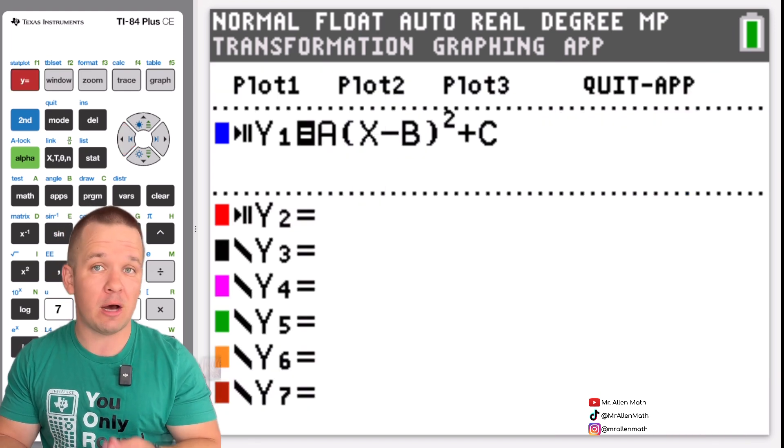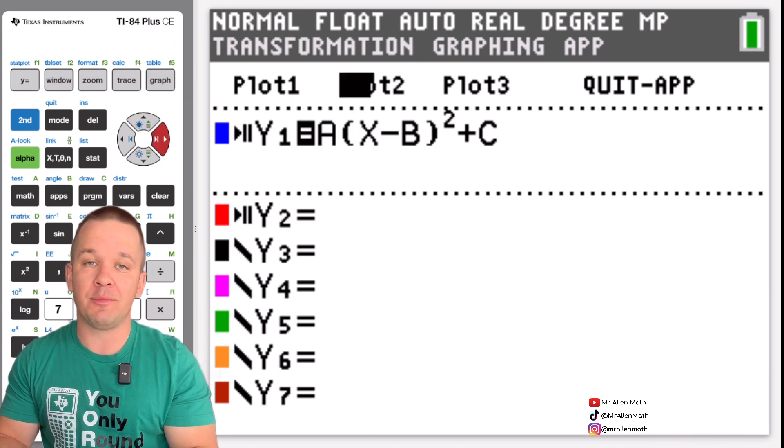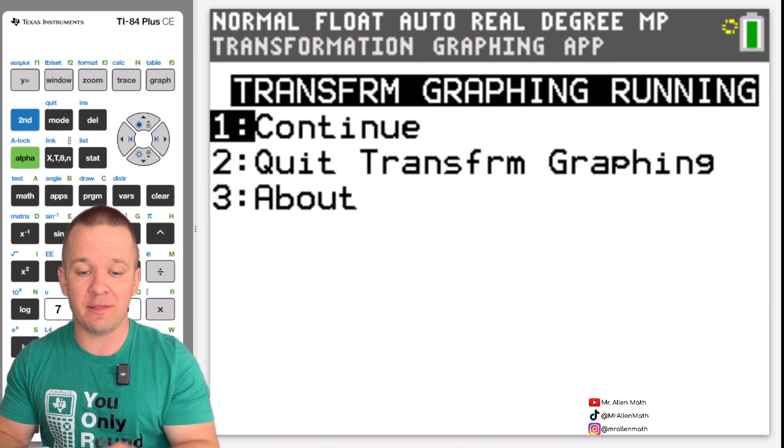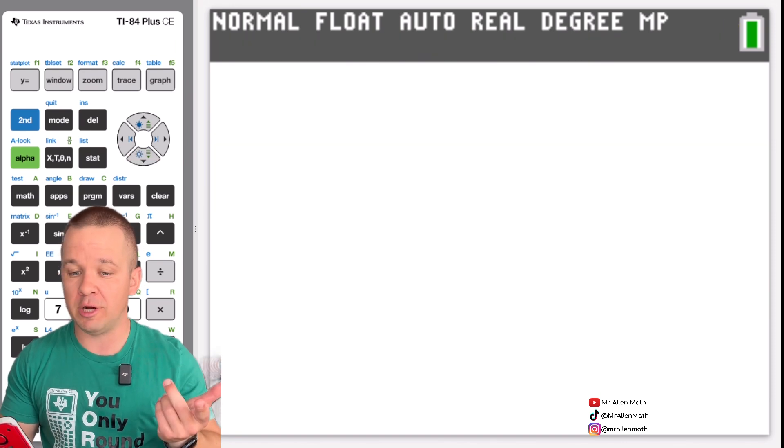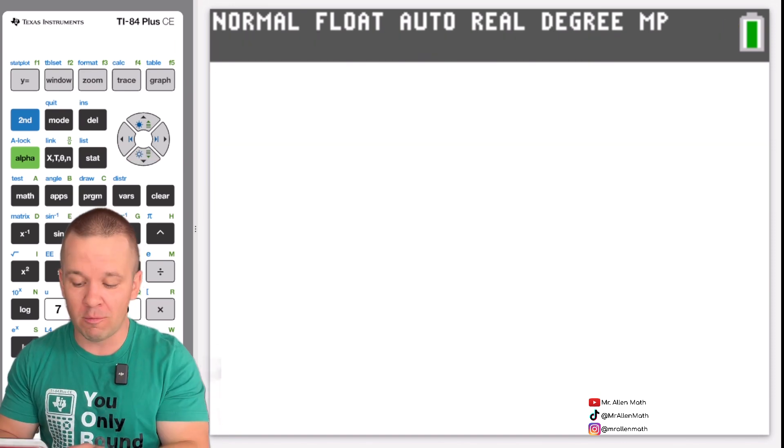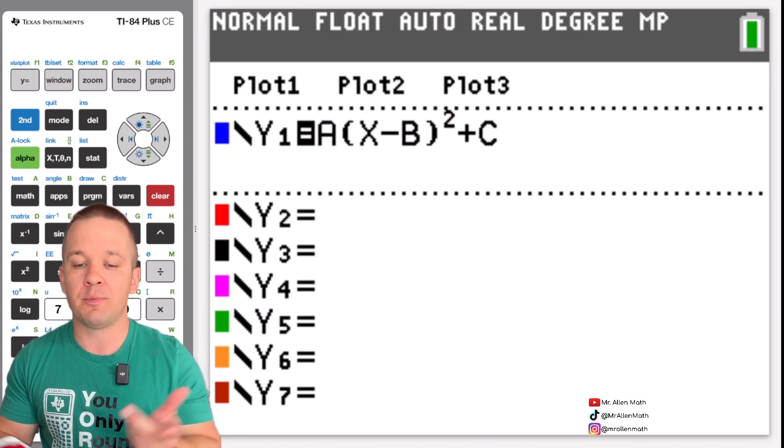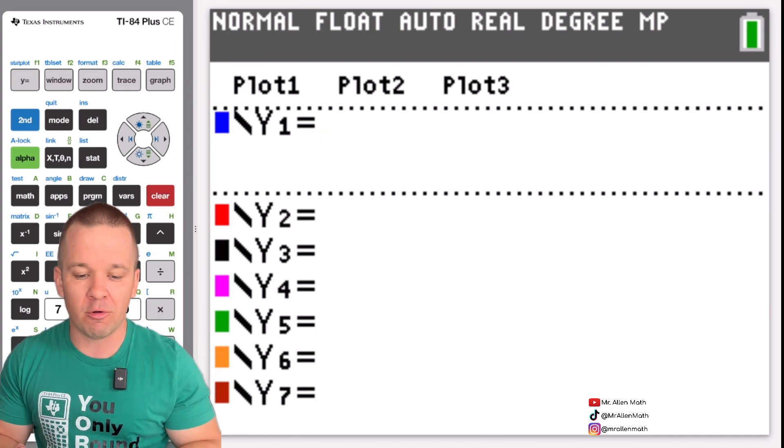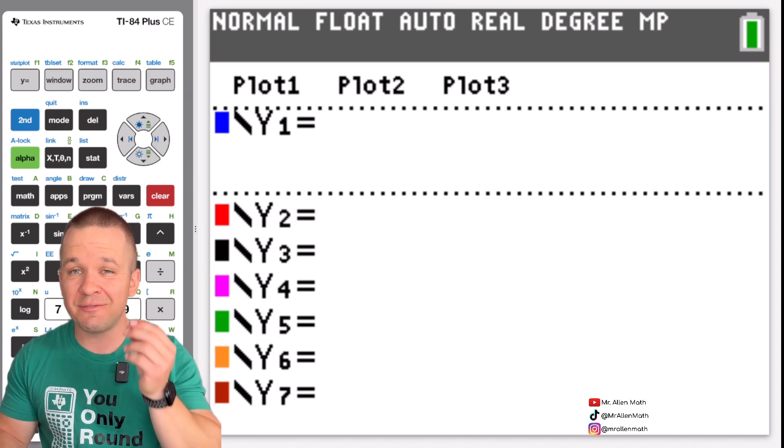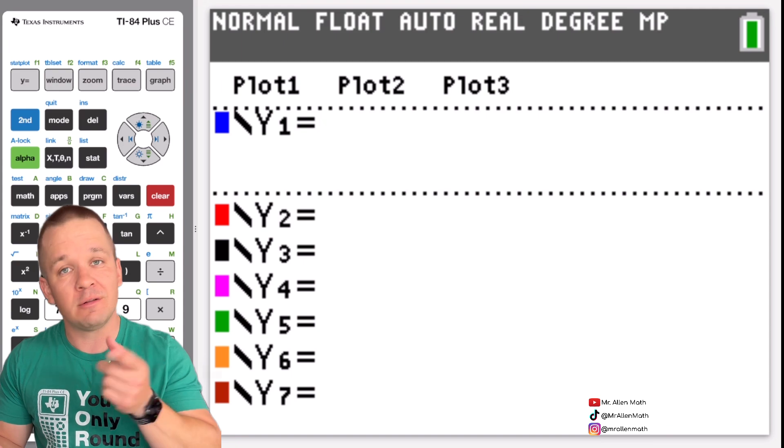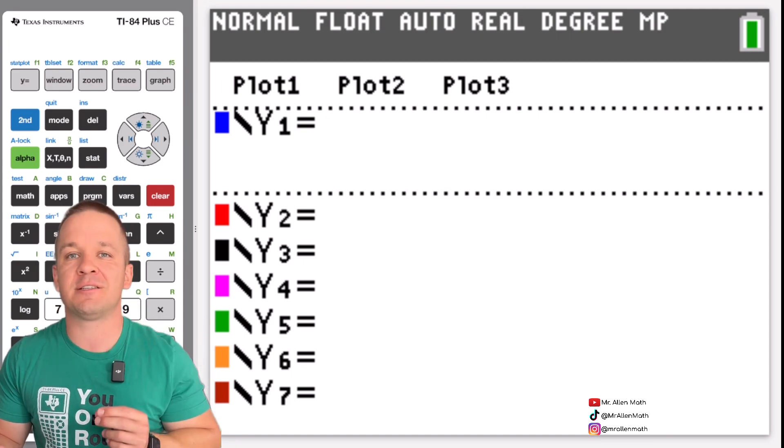Now to quit out of this app there's actually a couple ways to do it but if you're in the y equals like we talked about earlier in the video I'm just going to arrow up to where it says plot one plot two plot three, arrow over to quit app, hit enter on that and then quit transform graphing. Now you're back to your normal mode. You will still see the preloaded function in your y equals but we can just clear that out, get back to your normal graphing from there. That's about it. So if you guys have any questions at all please leave them in the comments and if you enjoyed this video like it, subscribe and have a fantastic day. See you guys later.